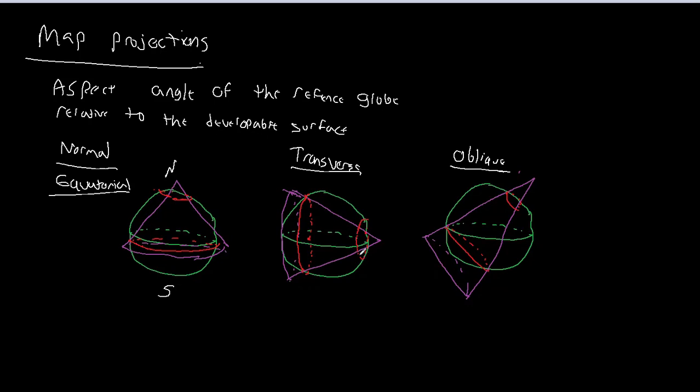If we rotate it on its side so that the standard lines run along meridians, we call that the transverse aspect. And if we just rotate it anywhere in between, we call that the oblique aspect. So hopefully that makes sense. And if you have any questions, please reach out. Thank you.